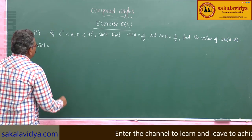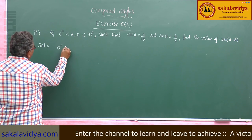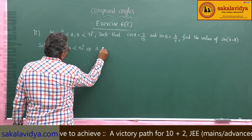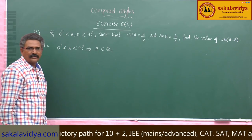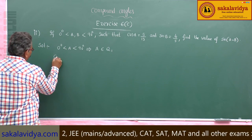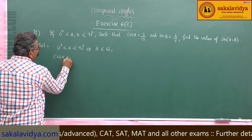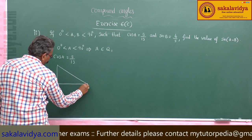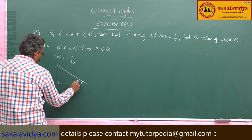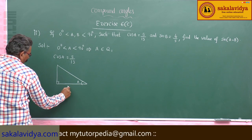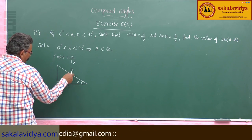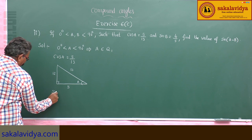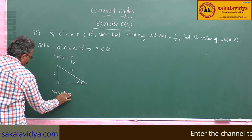Since 0 degrees less than a less than 90 degrees, that implies a belongs to the first quadrant. Given cos a equals 5 by 13, taking a right triangle: 169 minus 25 is 144, so the opposite side is 12. Therefore sin a equals 12 by 13.